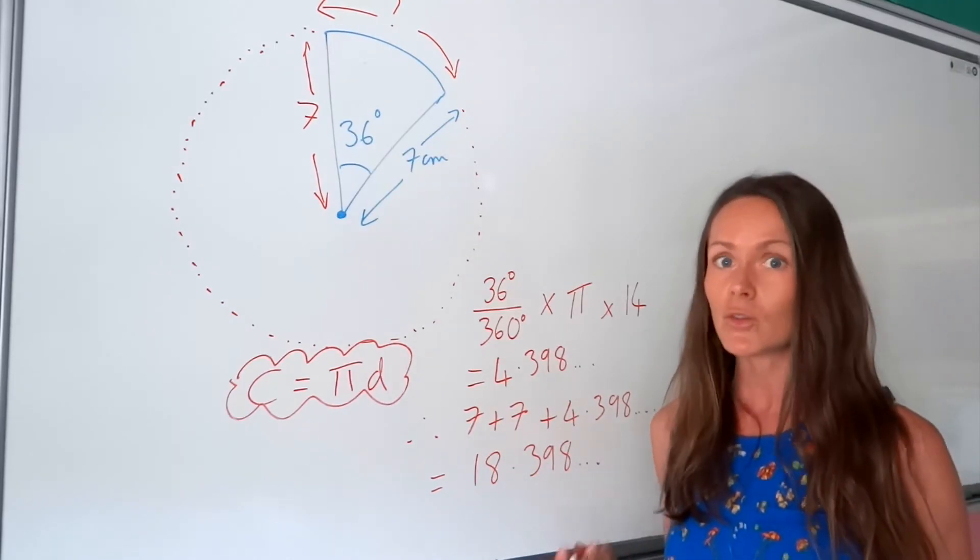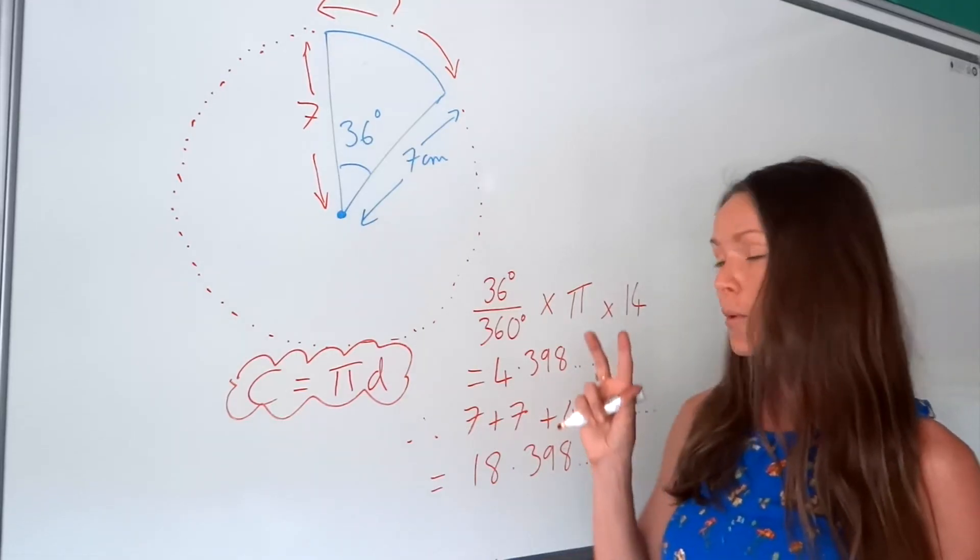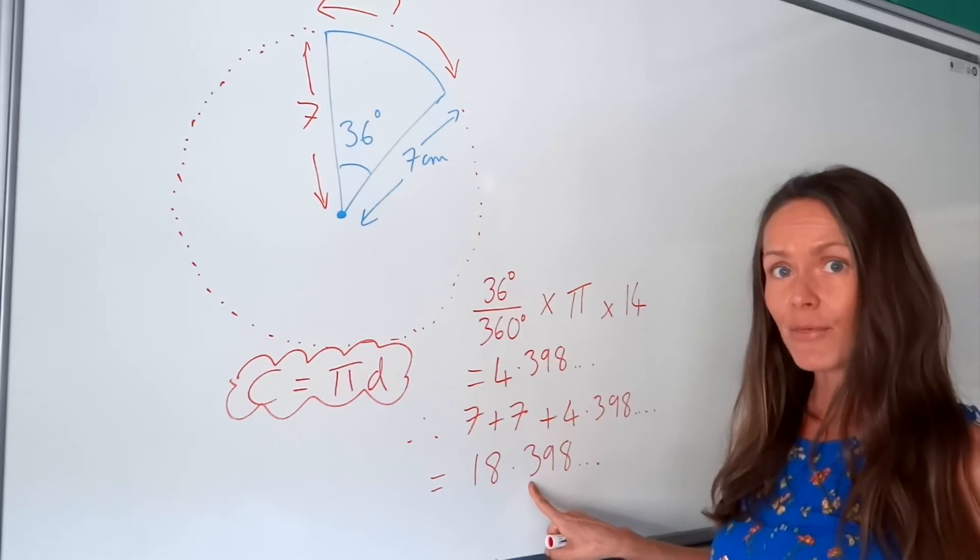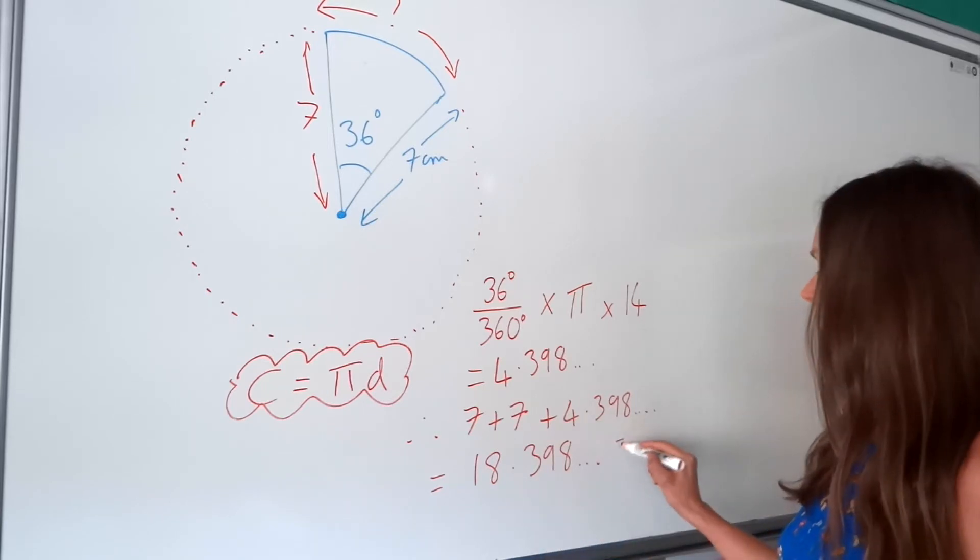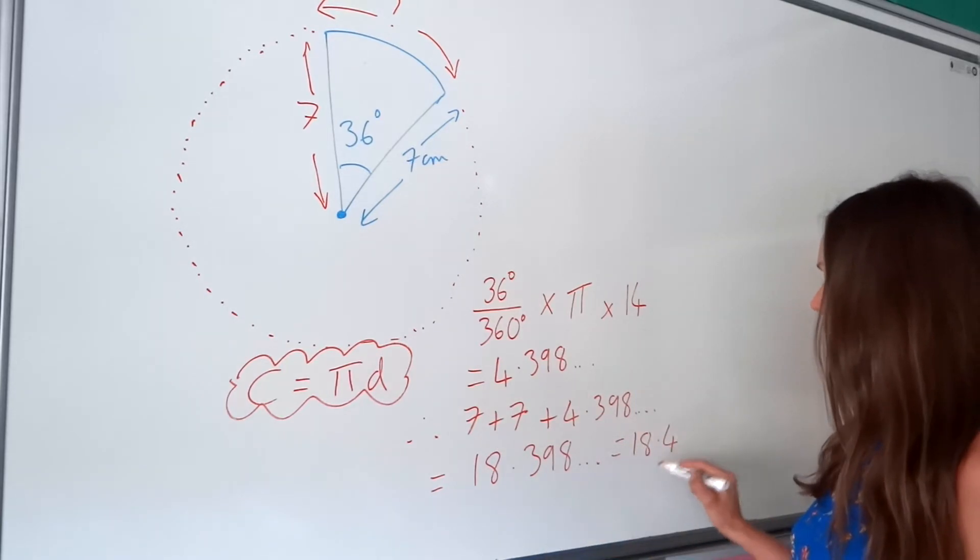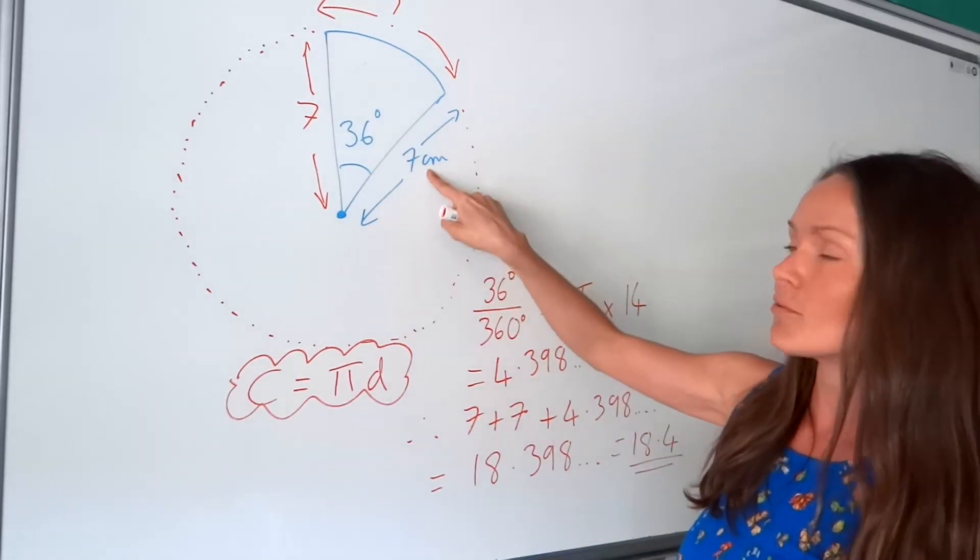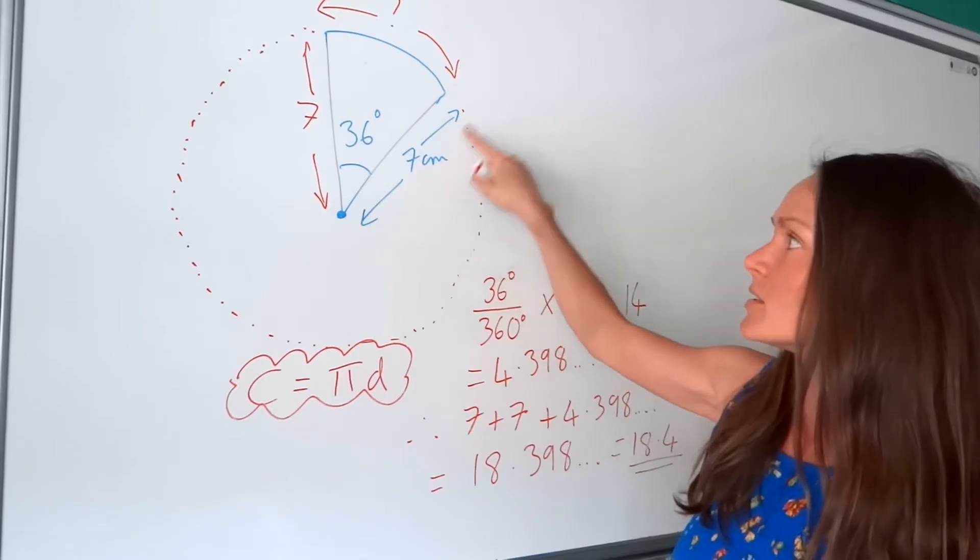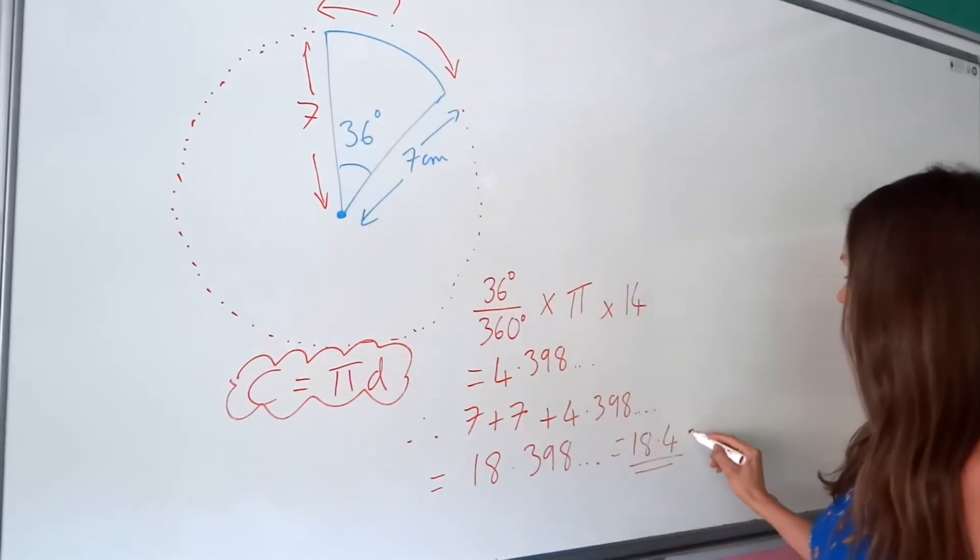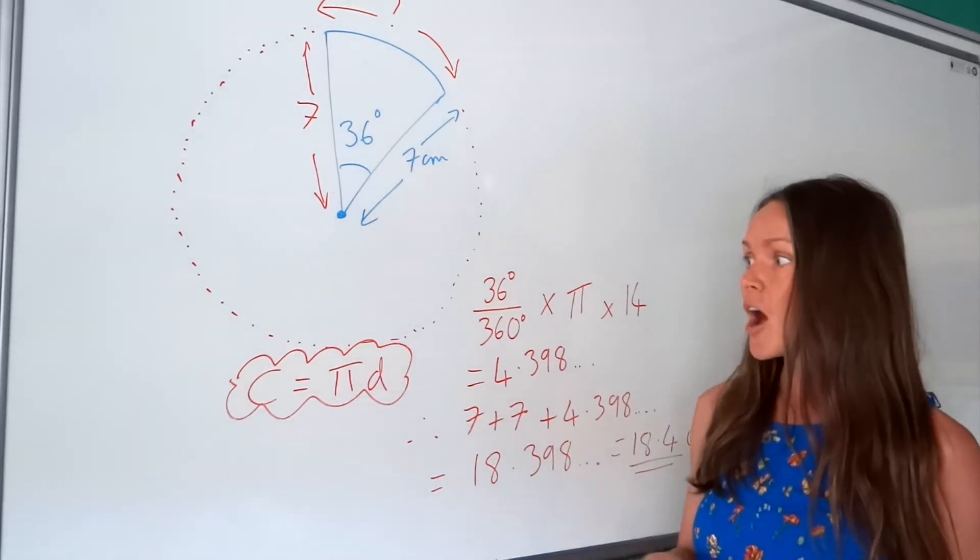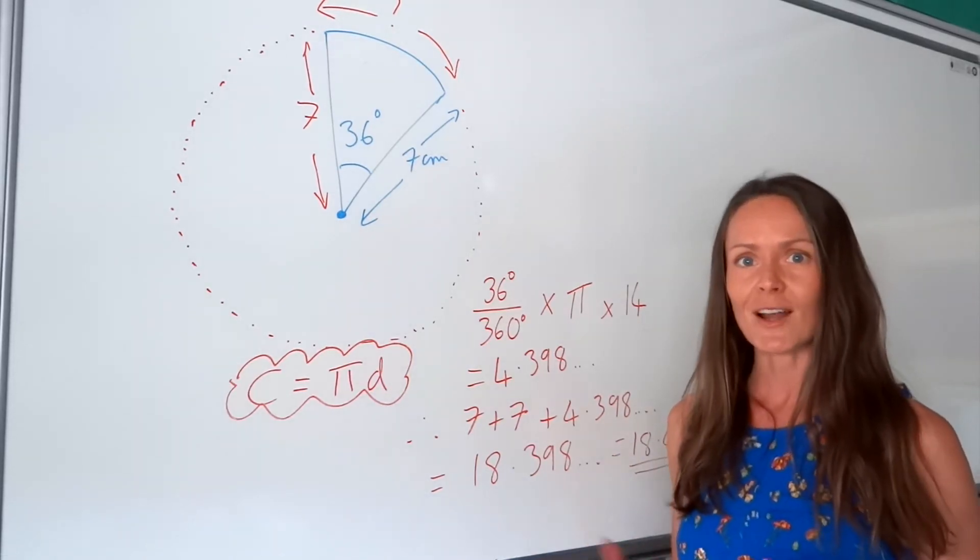So I'm going to round my answer to three significant figures. So I want three digits, one, two, three. But the nine rounds that three up one to the number four. So it's 18.4. The units in this question are in centimetres because the radius has been given in centimetres. So the perimeter is also in centimetres. So that's the perimeter of a sector. I'm going to do another hard example just now.